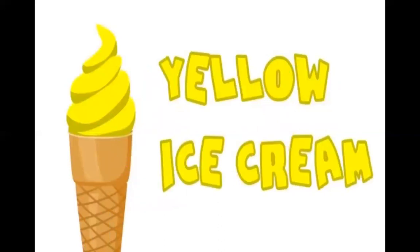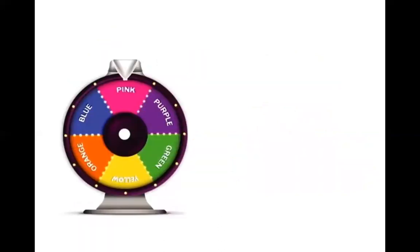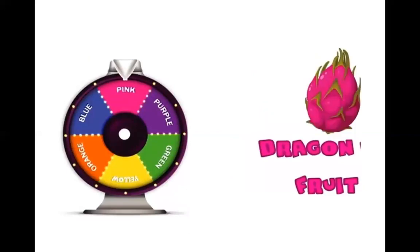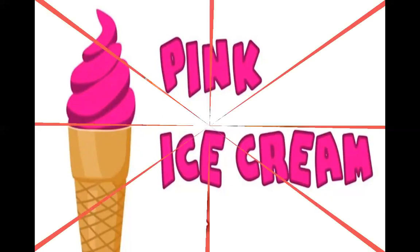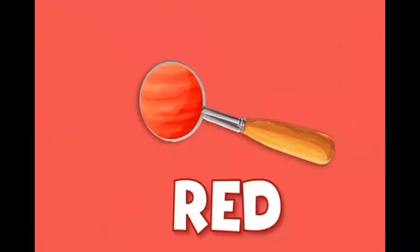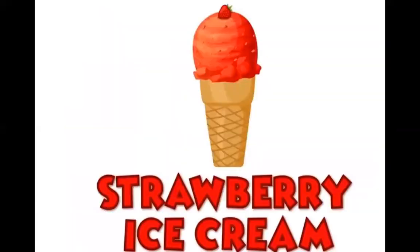Now pink — this is a dragon fruit. What color ice cream are we going to get from dragon fruit? Pink color ice cream! Can you see the pink color ice cream? Now red — from which fruit can we get red color ice cream? From strawberry! Correct. This is a strawberry ice cream.